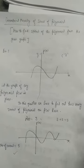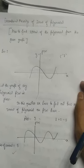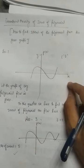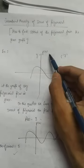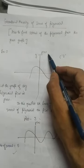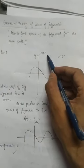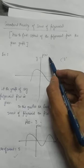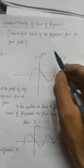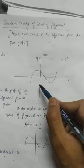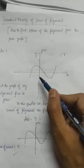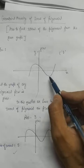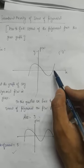The first step is to see in which variable the polynomial is given — in this case the polynomial is in variable x. The second thing is that we will see how many times the given graph is intersecting the x-axis.